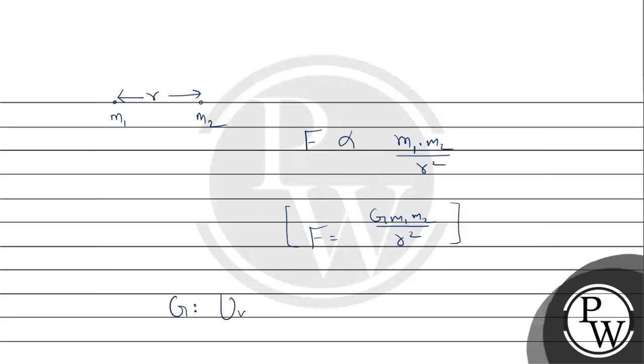Here, G is the universal gravitational constant, and this value is 6.67 × 10^-11 Nm² per kg².